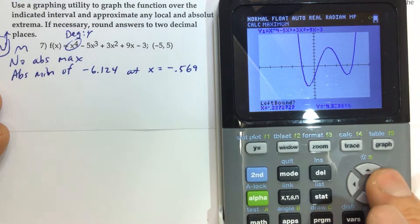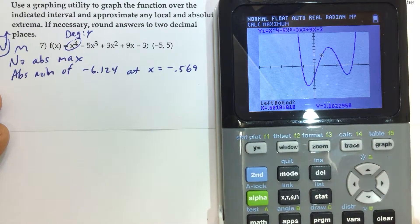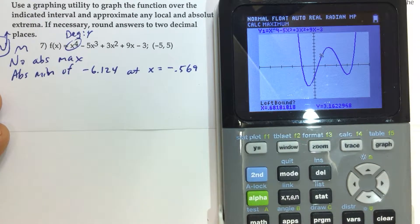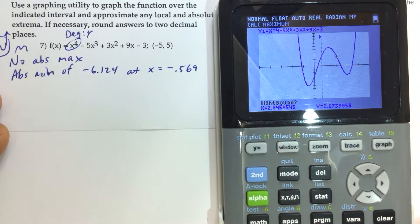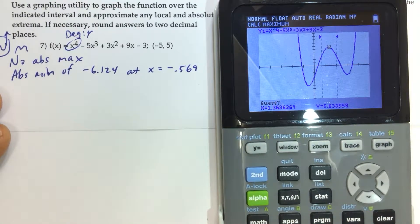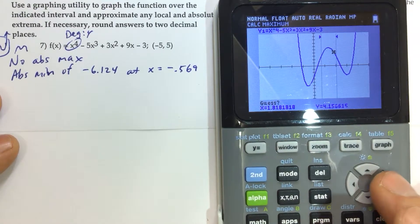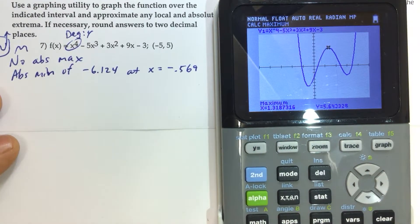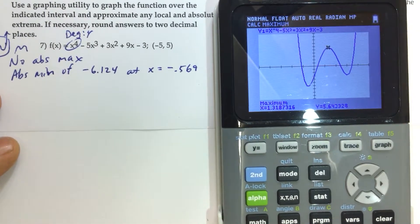Once we do that, we have to surround the high point there. Put a left boundary on it. Mark that by hitting enter. Move the cursor to the right. Hit enter again to mark the right boundary. And then we move the cursor anywhere up towards the top or anywhere actually in between the two vertical lines. And I could even leave it there. It will still move that cursor right up to the maximum value.